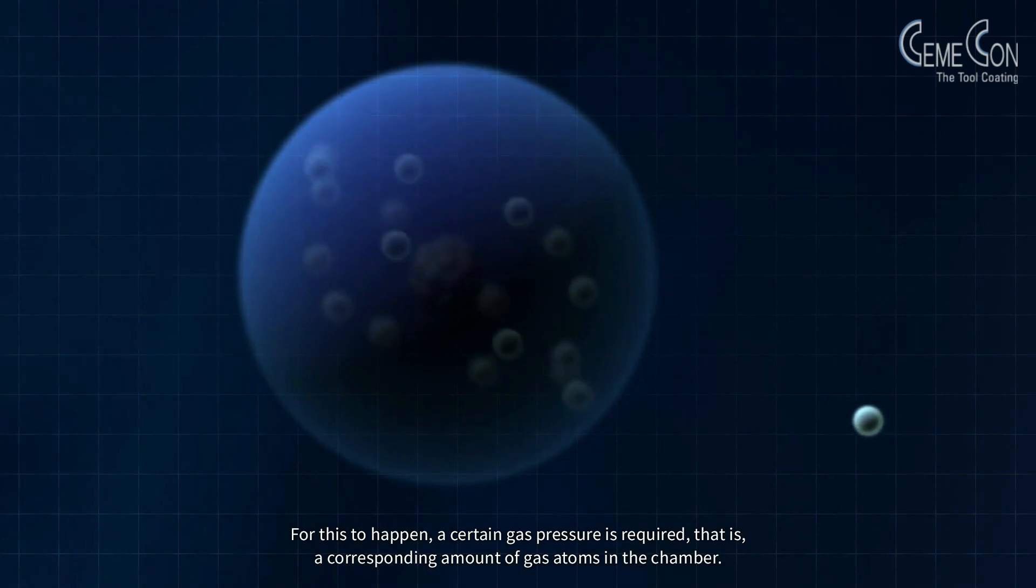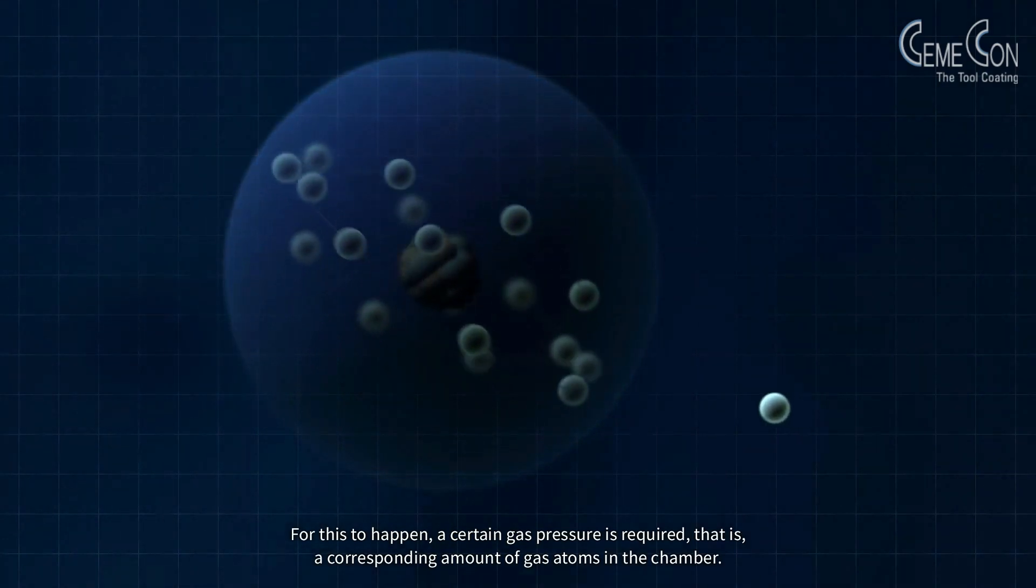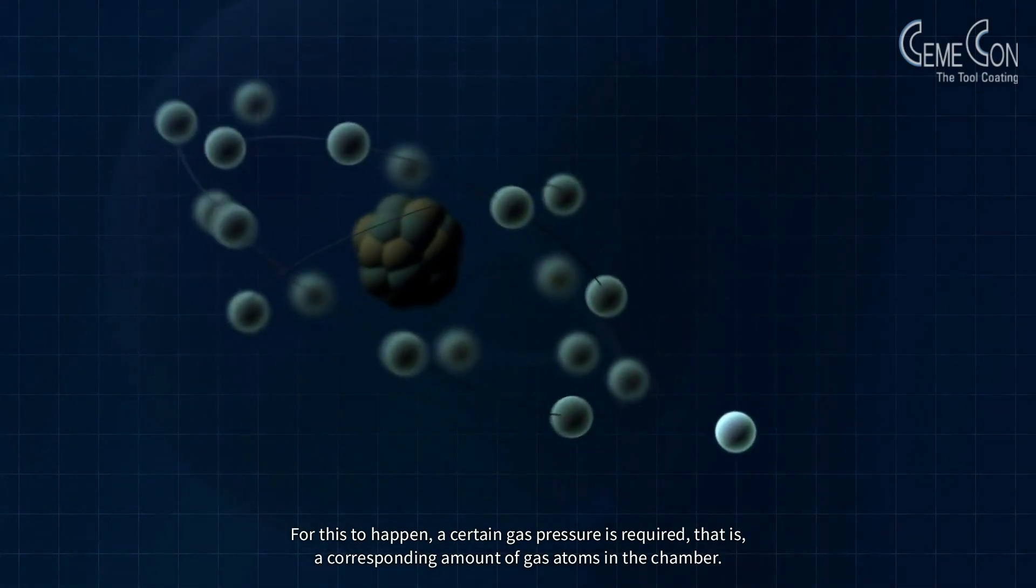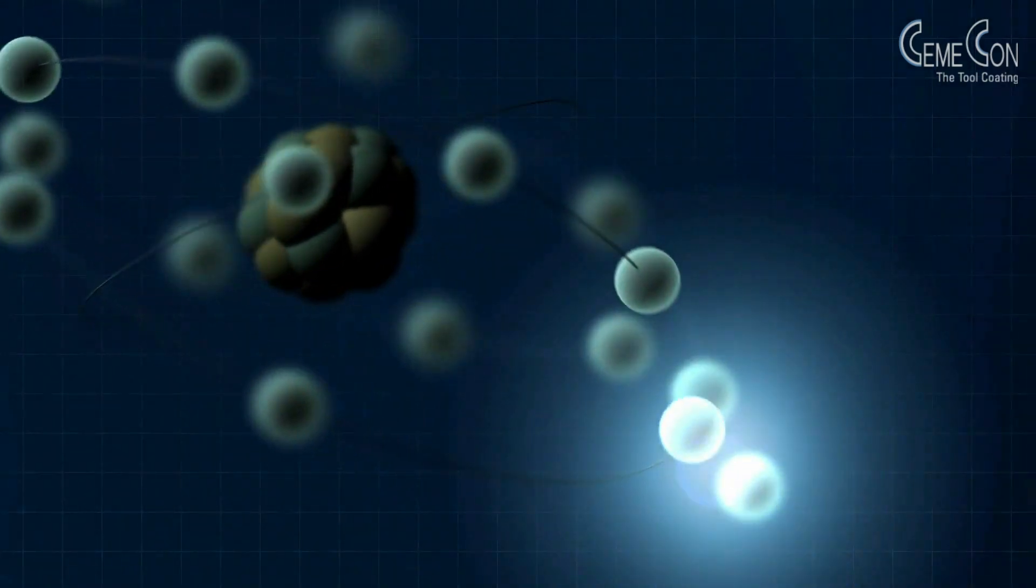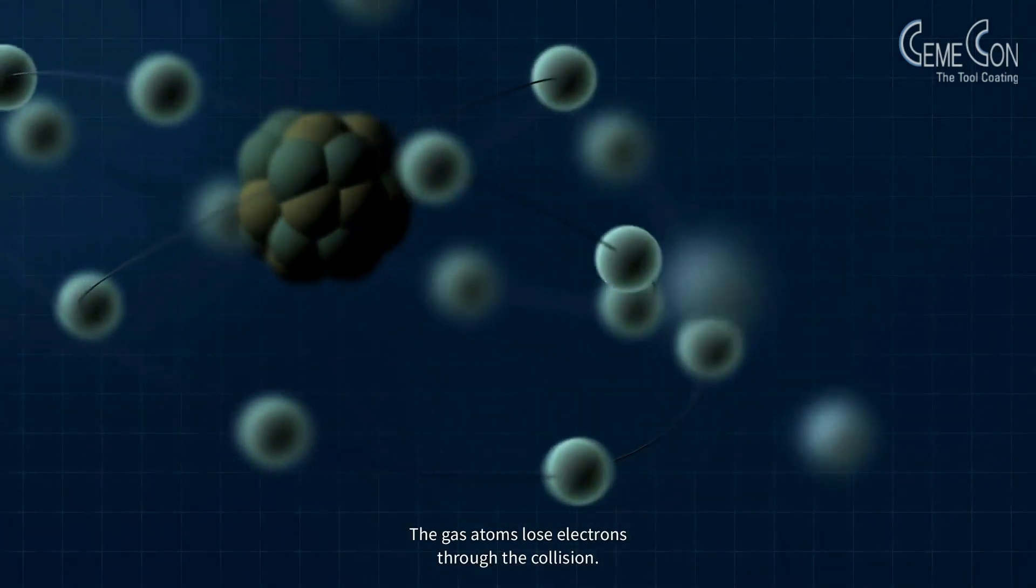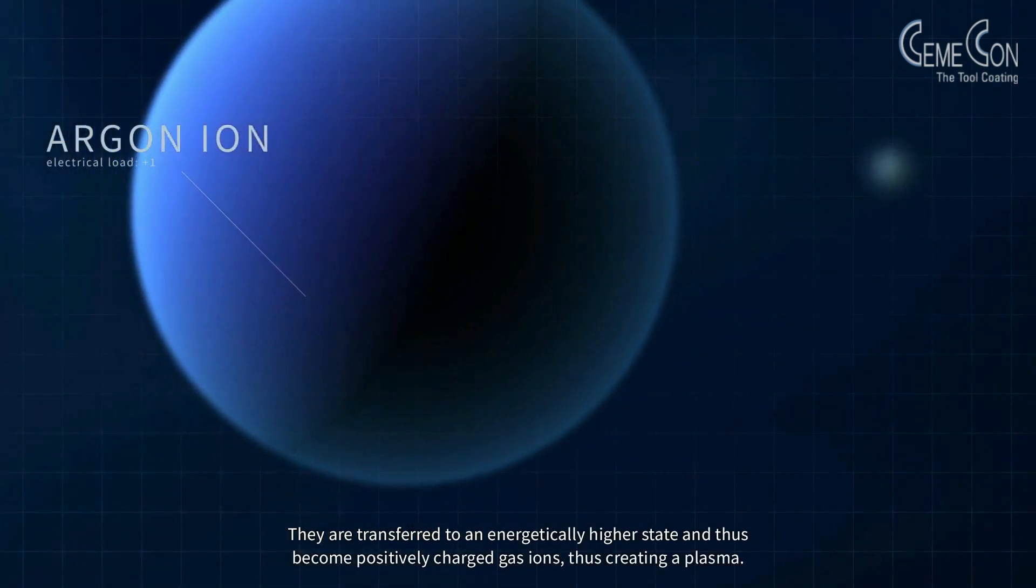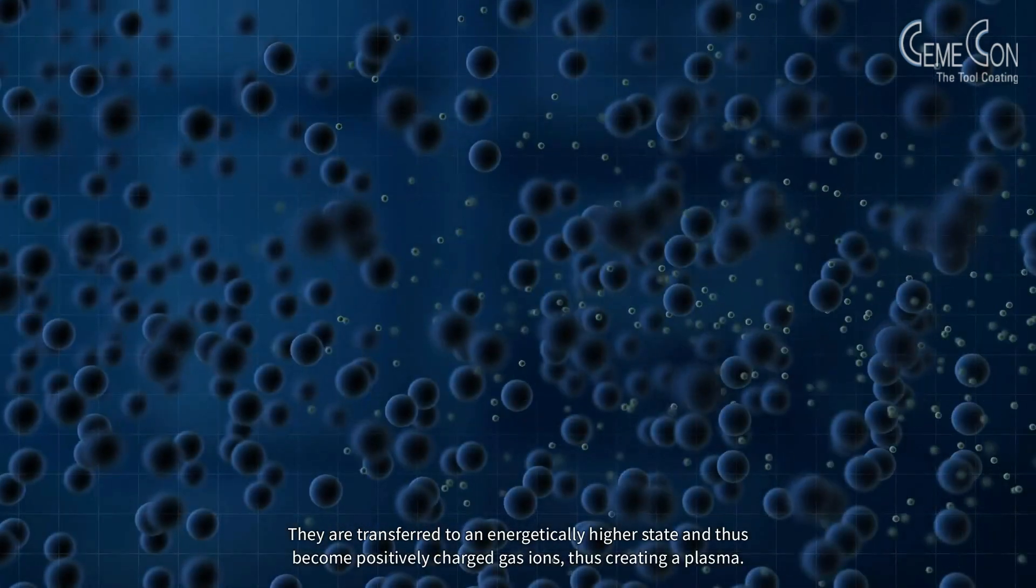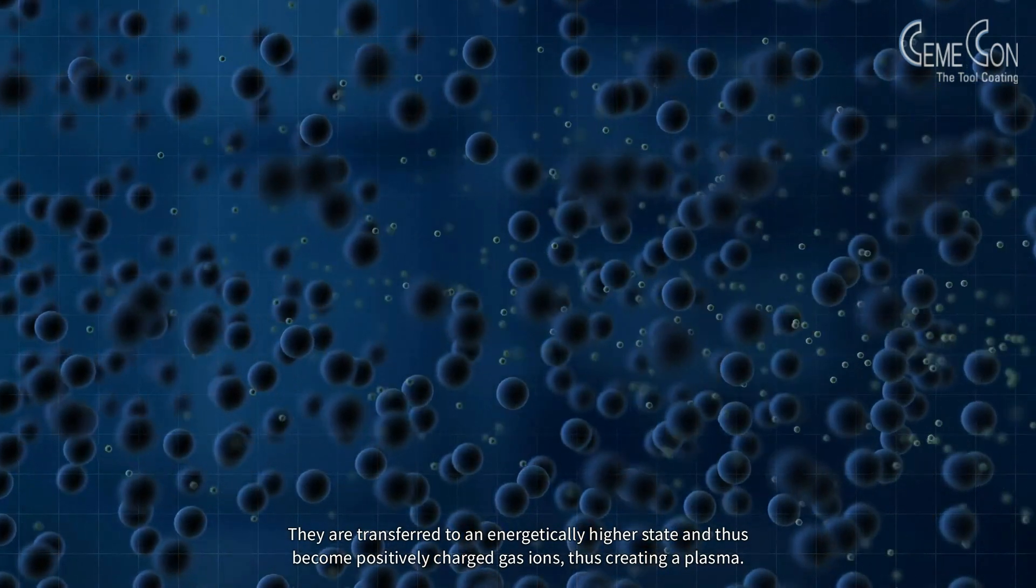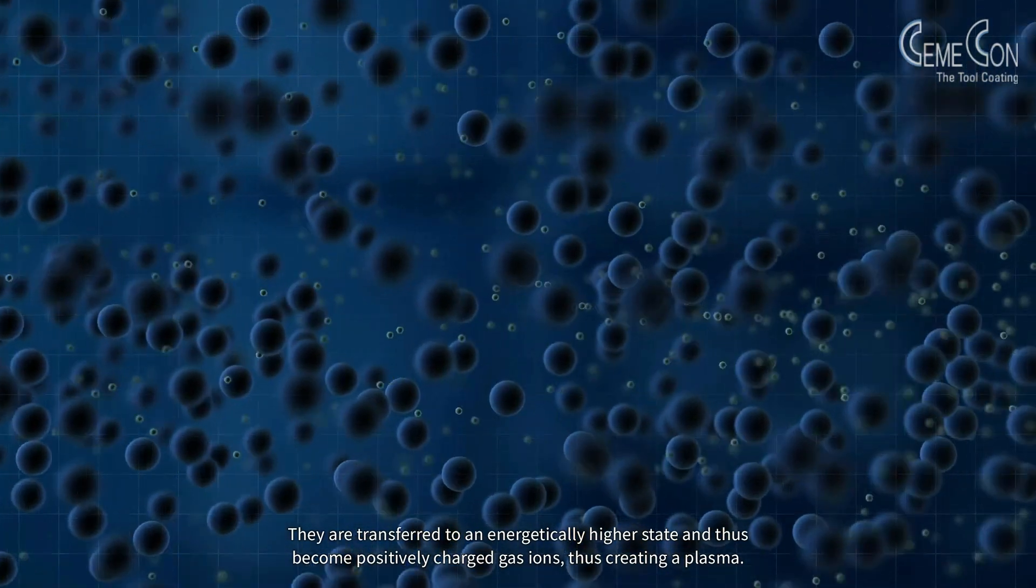For this to happen, a certain gas pressure is required, that is, a corresponding amount of gas atoms in the chamber. The gas atoms lose electrons through the collision. They are transferred to an energetically higher state and thus become positively charged gas ions, thus creating a plasma.